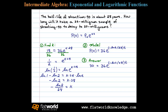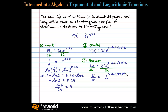Now we'll use this model to answer the question: how long will it take the sample to decay to 30 milligrams? We replace p of t with 30 milligrams, leaving only one variable t. Dividing both sides by 36 — 30 divided by 36 reduces to 5/6 — we have 5/6 equals e to the negative natural log of 2 divided by 28 times t power. We'll now apply the one-to-one property for logarithms and choose the natural log.